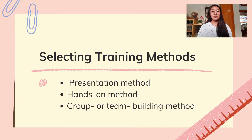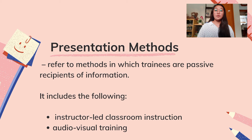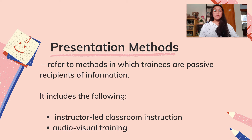Let us now proceed with selecting training methods. There are three categories. First, the Presentation Method refers to methods in which trainees are passive recipients of information — they just receive facts and data from the lecturer. Presentation methods include instructor-led classroom instruction and audio-visual training. Instructor-led classroom instruction typically involves having the trainer lecture a group. It is one of the most traditional, least expensive, and least time-consuming ways of training, and can be done by one or more instructors in conference rooms or classrooms. Normally, there are question-and-answer periods where trainees inquire and the trainers answer.